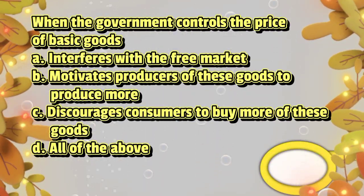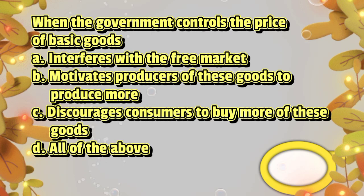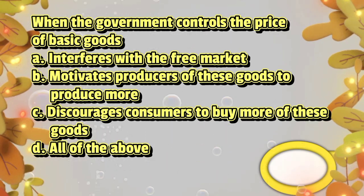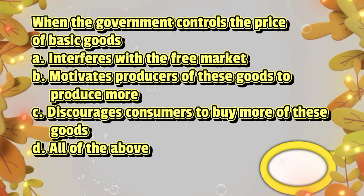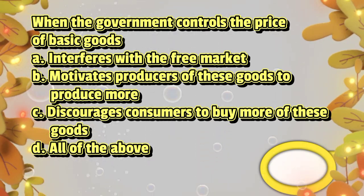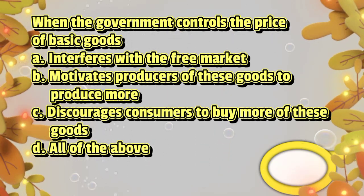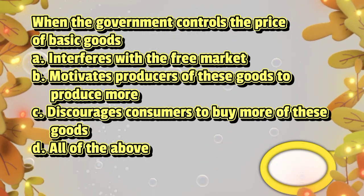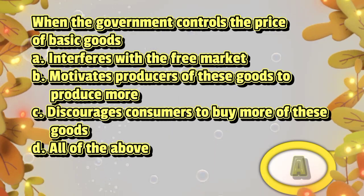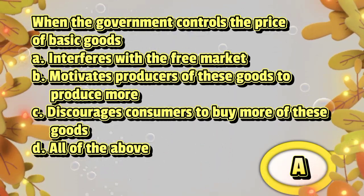When the government controls the price of basic goods: A. it interferes with the free market, B. it motivates producers of these goods to produce more, C. it discourages consumers to buy more of these goods, D. all of the above. The answer is letter A.